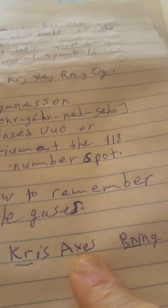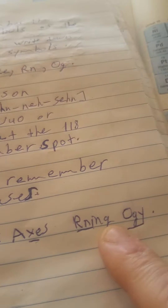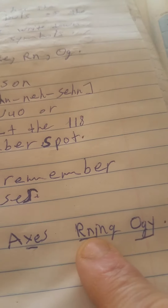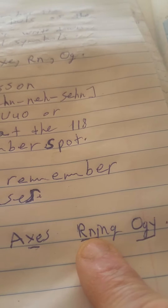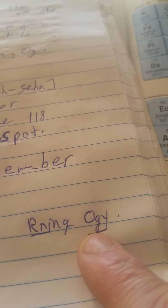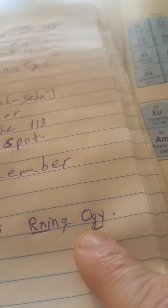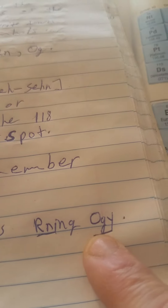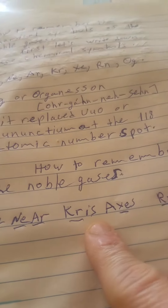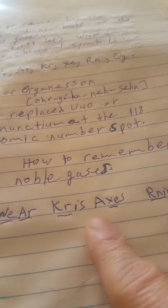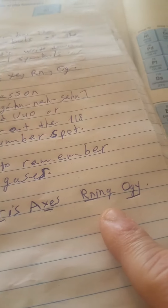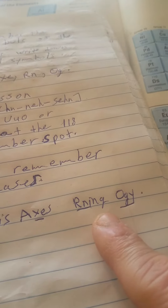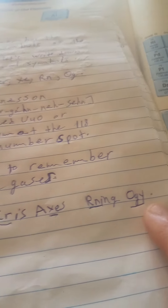And RN for radon, and OG for Oganesson, which is 118. So: He, Nia, Chris, X's running RG.